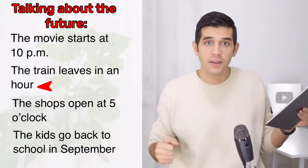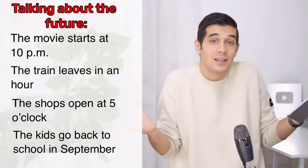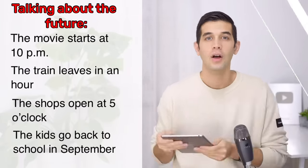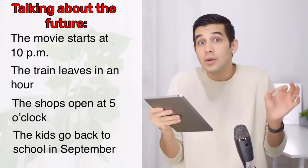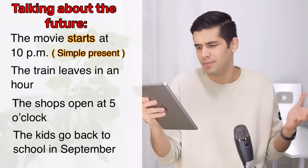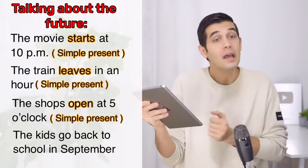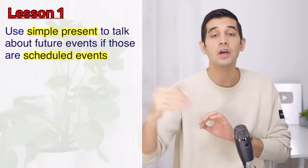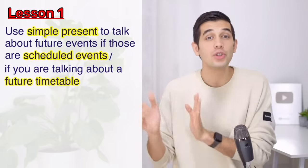The shops open at 5 o'clock — it's 2 o'clock now, so we're talking about the future. Or maybe it's summer and you say, the kids go back to school in September — again, we're talking about the future. All of these sentences talk about the future. But look at the verbs and the tense: the movie starts, simple present; the train leaves, simple present; the shops open, simple present; the kids go, simple present. You can use simple present to talk about future events if those events are scheduled events, or in other words, if you are talking about a future timetable.